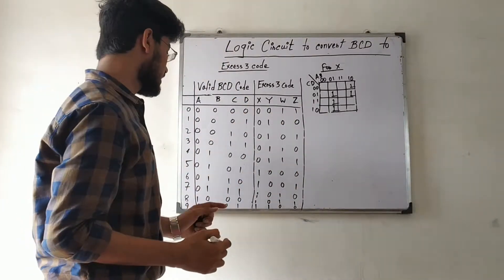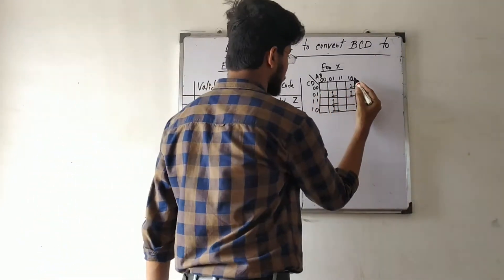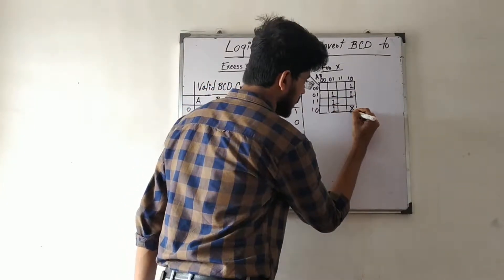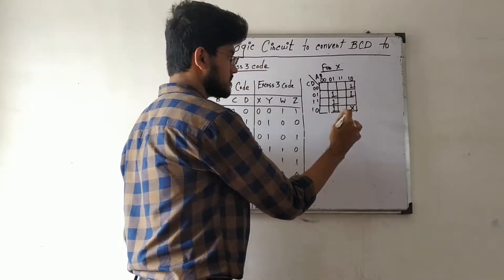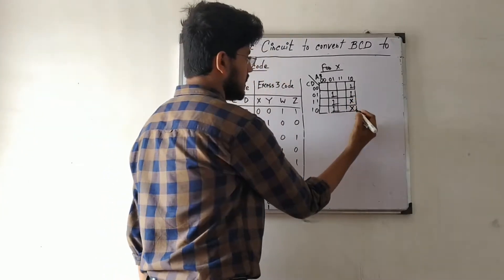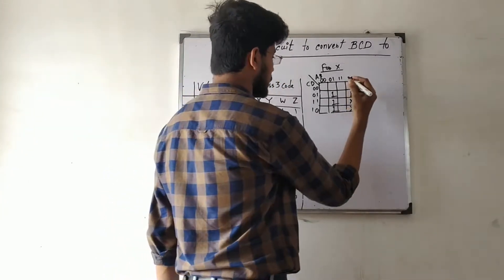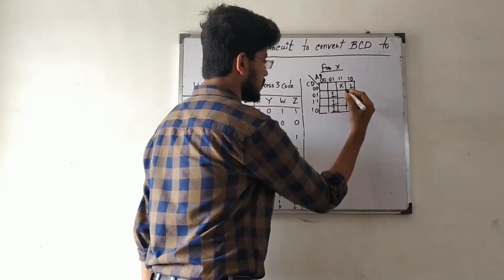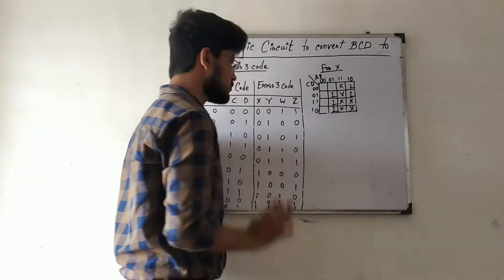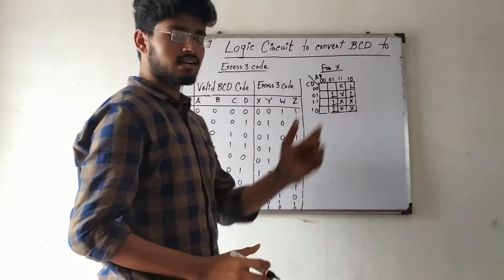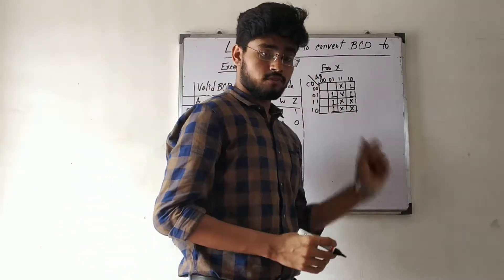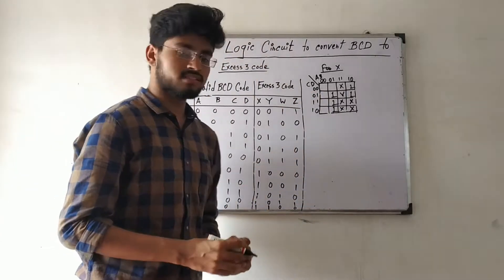The invalid BCD codes from 10 to 15 correspond to inputs like 1010, 1011, 1100, 1101, 1110, and 1111. These are all invalid BCD, so we mark all those corresponding K-map blocks as don't-care conditions.